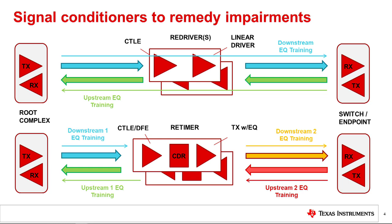If attenuation is too high for correction by a redriver, or the channel is too complex, a retimer is a perfect solution. Another difference between retimers and redrivers comes in the form of device latency. Protocol awareness and data retiming functions built into the retimer add latency, up to 64 nanoseconds in Gen 4. The redriver's linear approach results in a very low latency solution, only about 100 picoseconds.